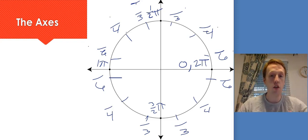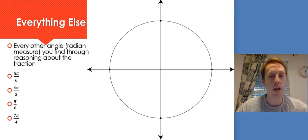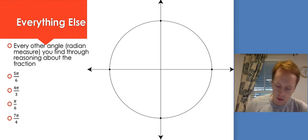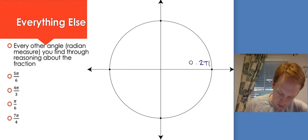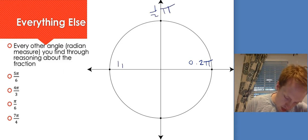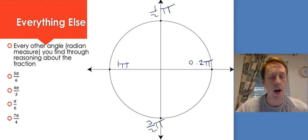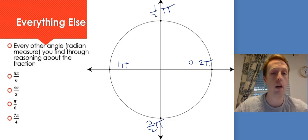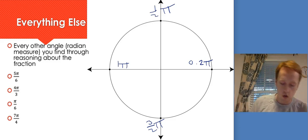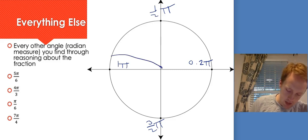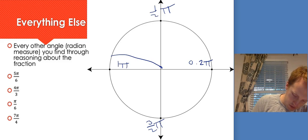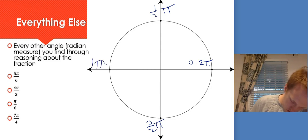Every other radian measure, you find through reasoning about the fraction. Remember, this is 0 and 2π, this is 1/2 π, this is 1π, and this is 3/2 π. So let's figure out where 5π/6 is. I'm going to think about the fraction 5/6. I know 5/6 is a little bit less than 1. It's an over-6, so it's close to the x-axis. Since 5/6 is less than 1, it must be right here — that's where 5π/6 is.